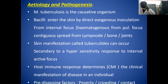Regarding etiology and pathogenesis, cutaneous tuberculosis is caused by Mycobacterium tuberculosis. The bacillus can enter the skin by: first, direct exogenous inoculation; second, spread from an external focus, that is hematogenous spread from a pulmonary focus, or contiguous spread from lymph node, bone, or joint; and third, cutaneous manifestation can occur secondary to a hypersensitivity response to an internal active focus.